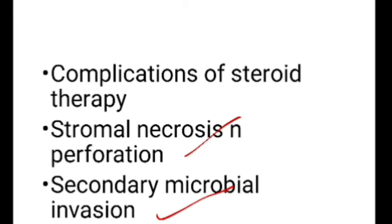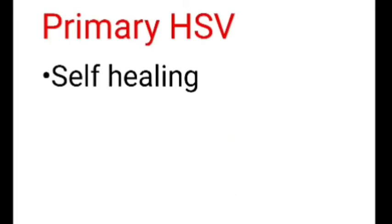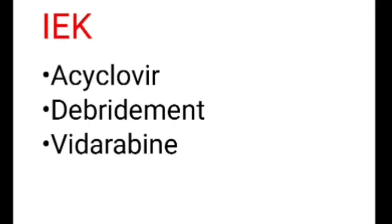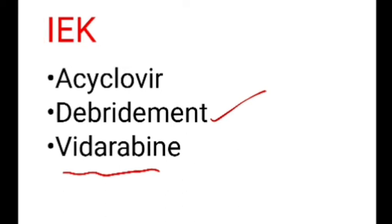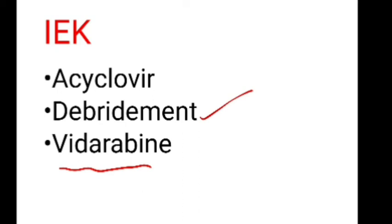Moving on to treatment by specific type: in primary HSV keratitis, as discussed, it is self-healing — only supplement with preservative-free lubricating eye drops. In recurrent infectious epithelial keratitis, treat with acyclovir. Debridement can also be tried, done only in the dendritic ulcer stage, extending 2mm beyond the edge of the ulcer. If the ulcer is not healing, switch to vidarabine; if still not healing, suspect neurotrophic keratitis or stromal involvement. There is no role of steroids in infectious epithelial keratitis.